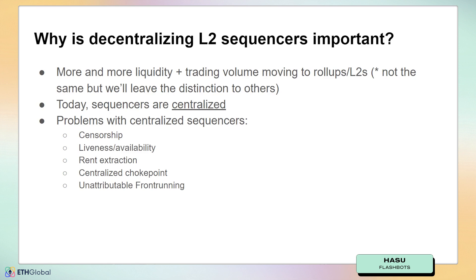I think it's quite possible that we will see a future where spinning up a new blockchain is kind of like spinning up a new smart contract today. So we will have many rollups and these rollups all will have sequencers. And today all of these sequencers are centralized. Centralized sequencers can censor the user, they can go offline, they can charge arbitrary prices, they are a regulatory choke point. And they can see the user transaction before it gets confirmed and do various things with it that are hard to attribute.